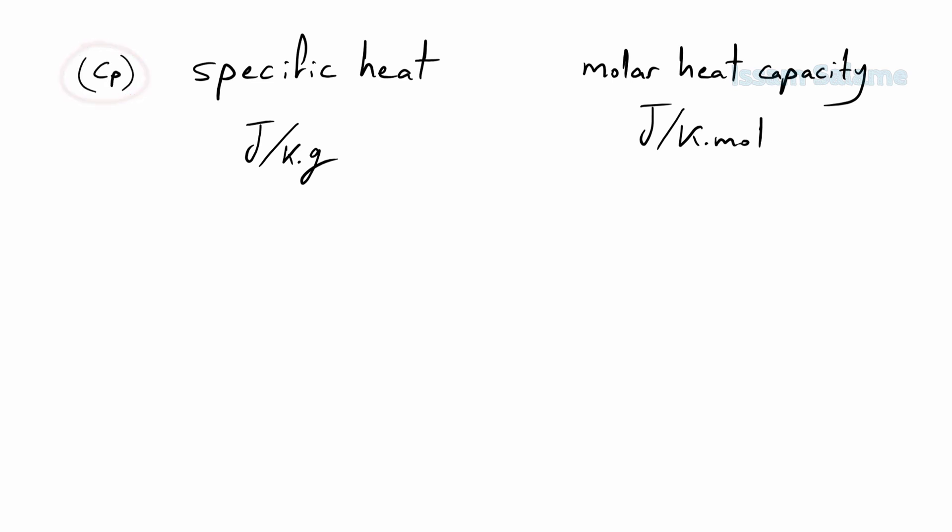And capital C for molar heat capacity. In some books, the symbol for specific heat is a small letter s. To convert the unit of specific heat to the unit of the molar heat capacity, we have to multiply it with a gram per mole. But a gram per mole is the unit for the molar mass. So from now on, the relation between specific heat and molar heat capacity is that specific heat multiplied by the molar mass will give us the molar heat capacity.